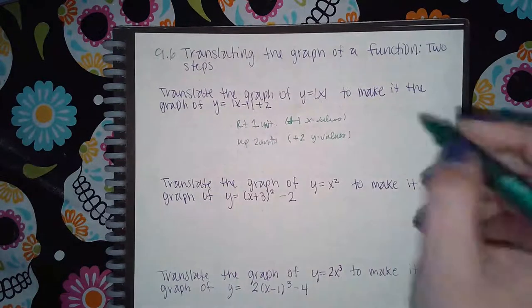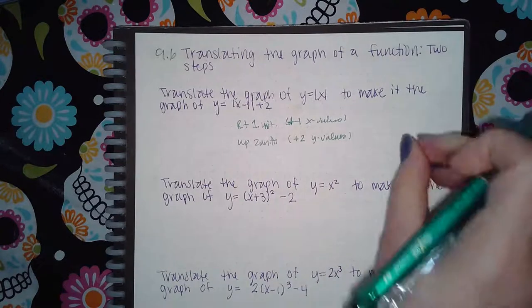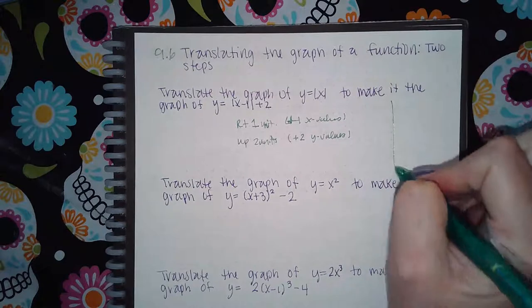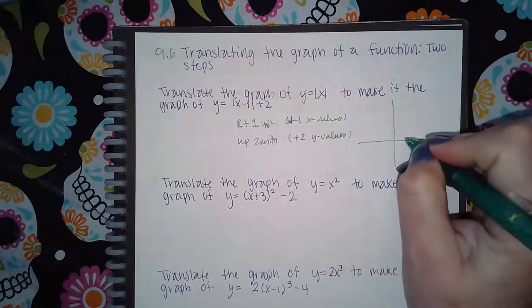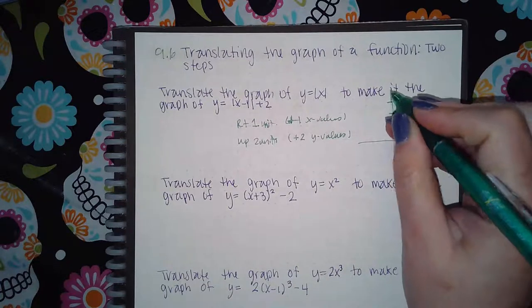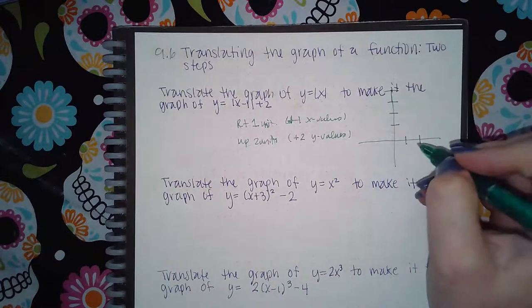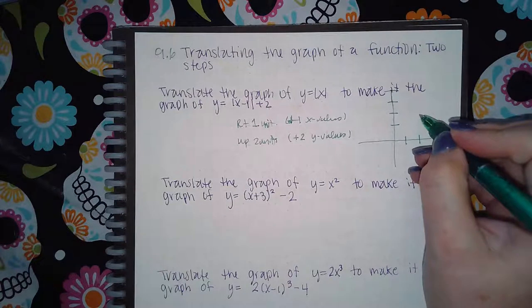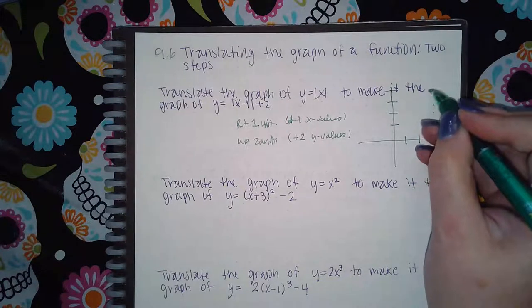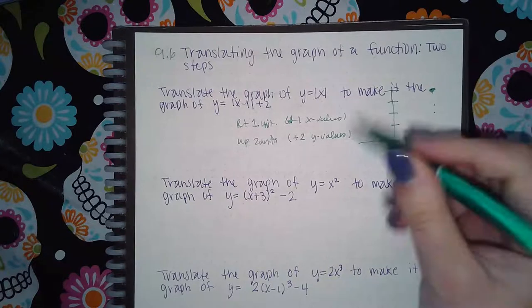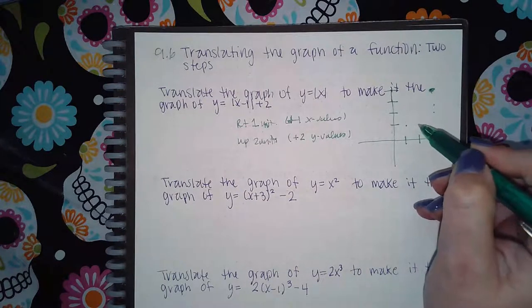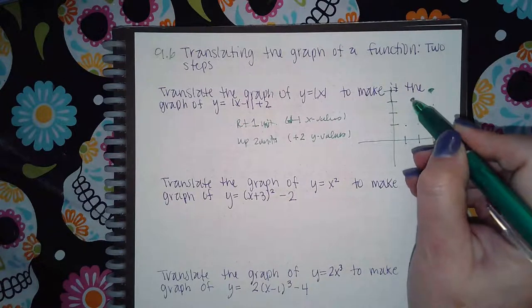In the computer, you just grab the function and then move it to the right one and then up 2 units. What the graph should look like is: to the right 1 and then up 2 units — so at (3, 4). Right 1 unit and up 2 units, so it should be here.